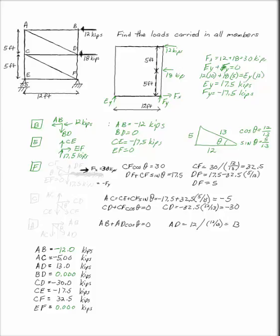Now if I move on to joint F, I have DF going up, 17.5 kips coming down, which is minus FY, 30 kips coming over. Here's my CF. This is EF, but EF has to be equal to zero.